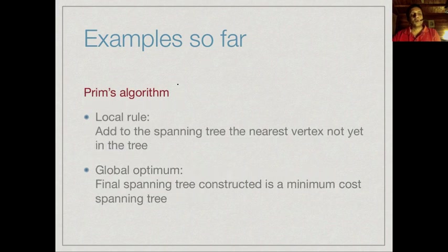A closely related algorithm is Prim's algorithm for the minimum cost spanning tree. Here we incrementally build up a tree, and at each stage we add to the spanning tree the nearest vertex not yet in the tree. The global optimum achieved is that we construct a spanning tree that is minimum cost.